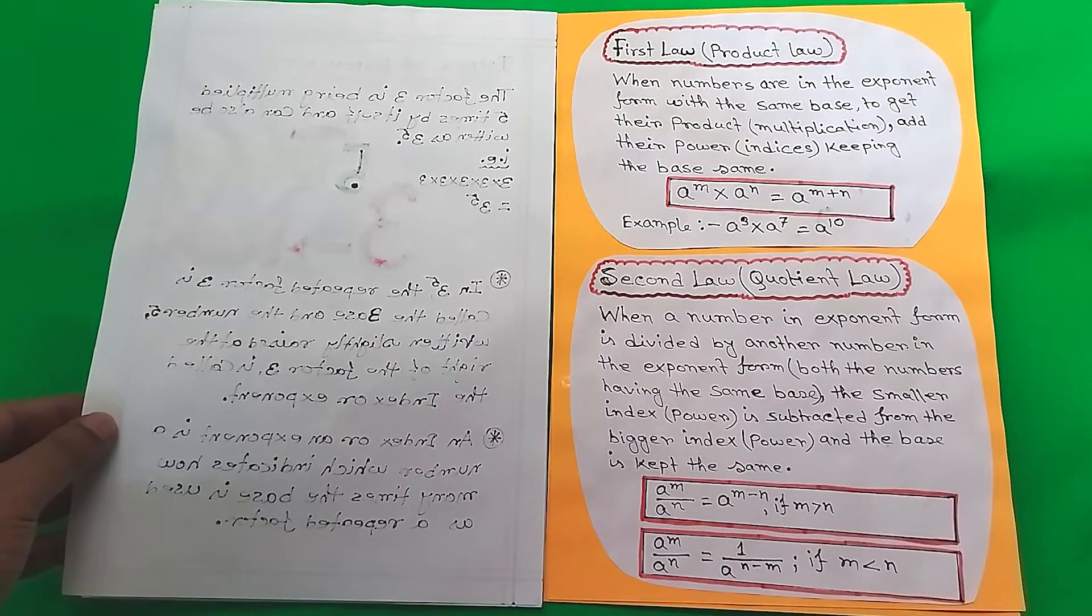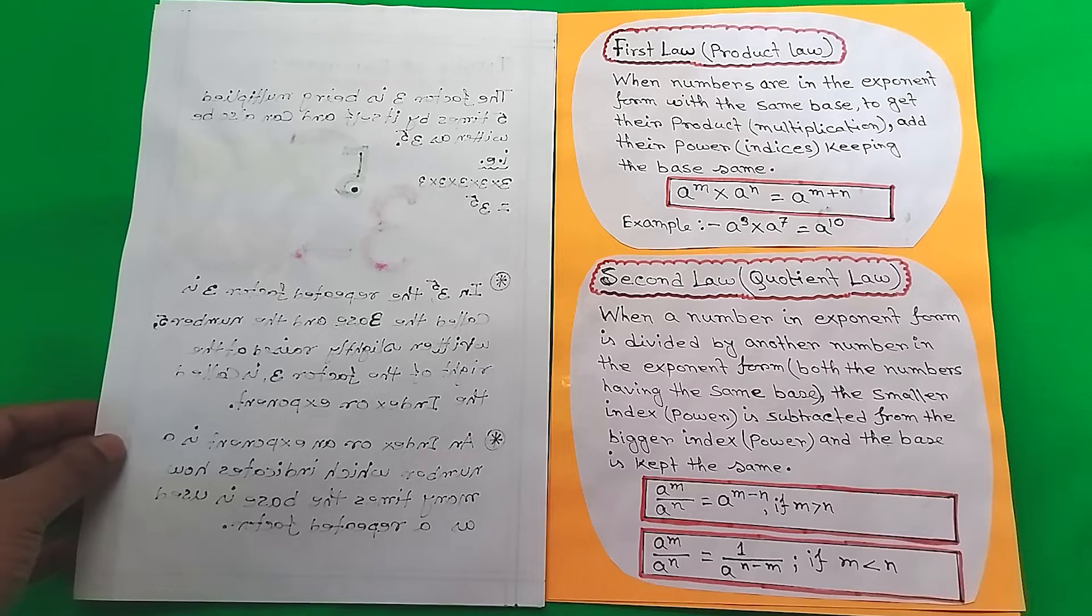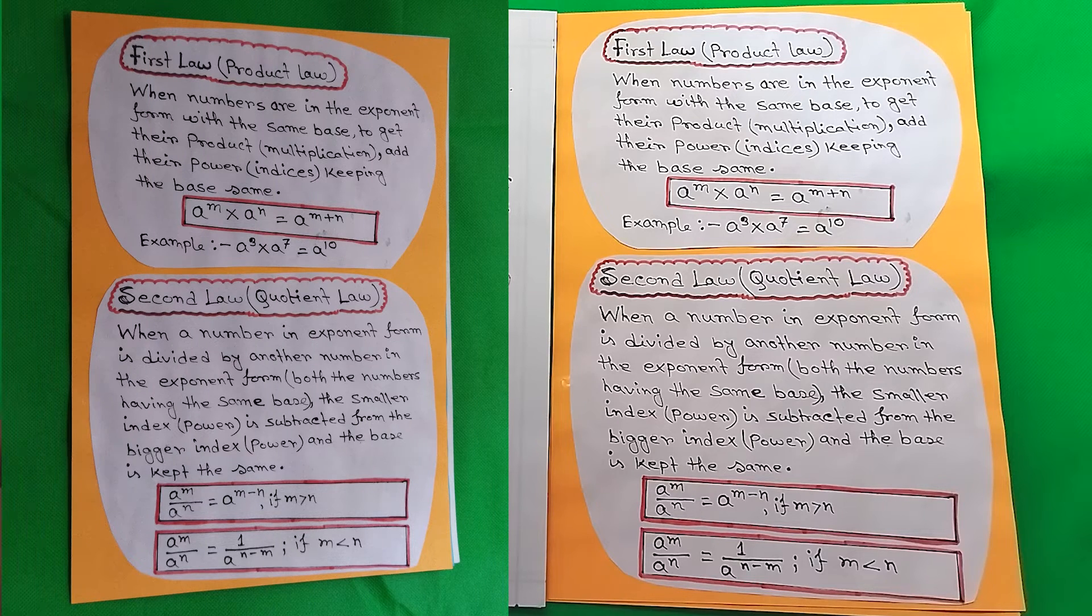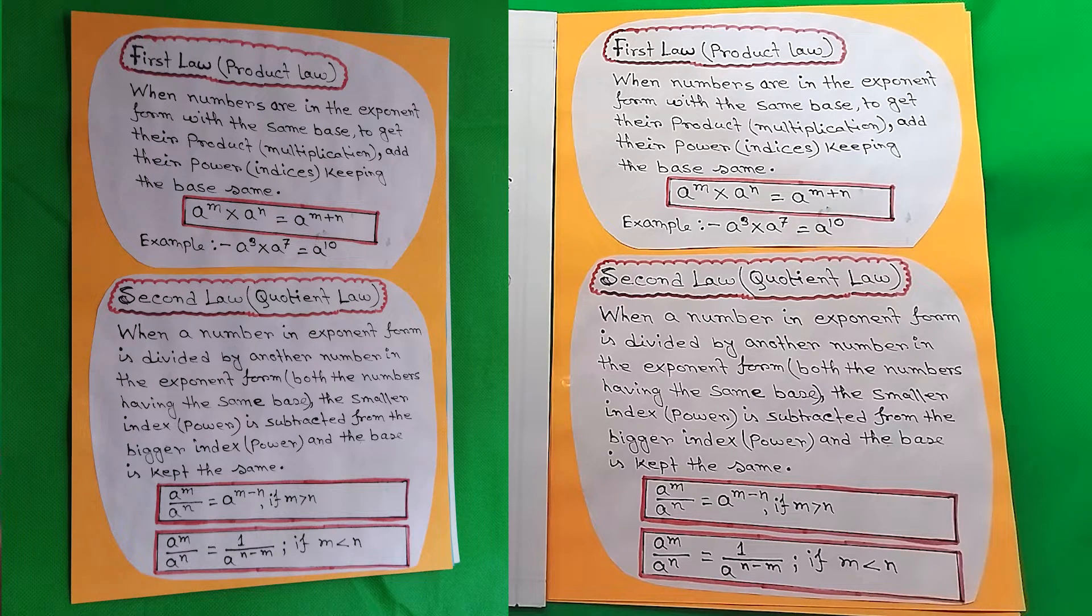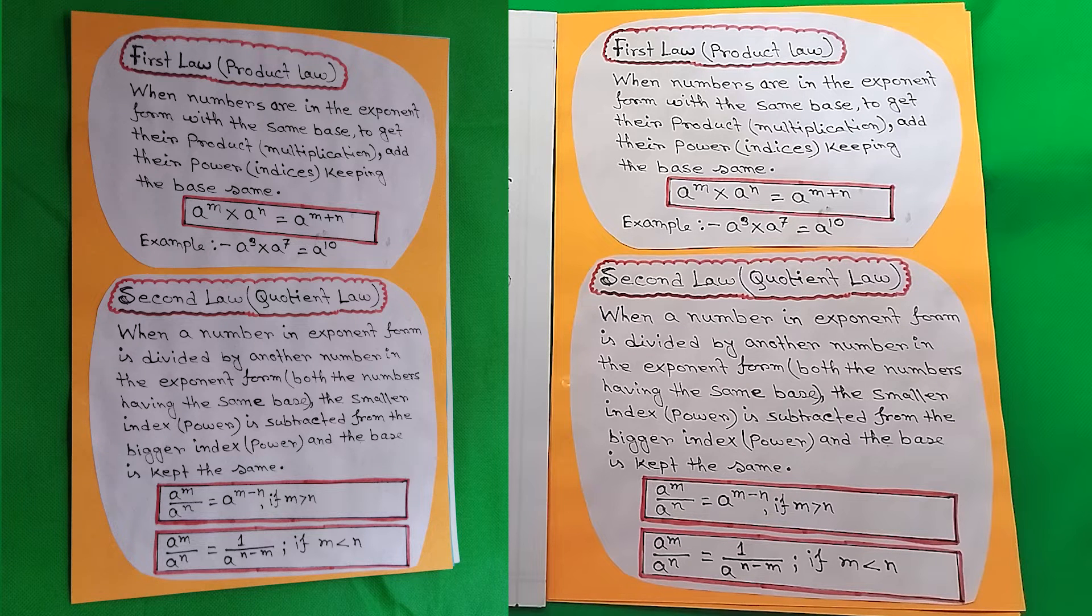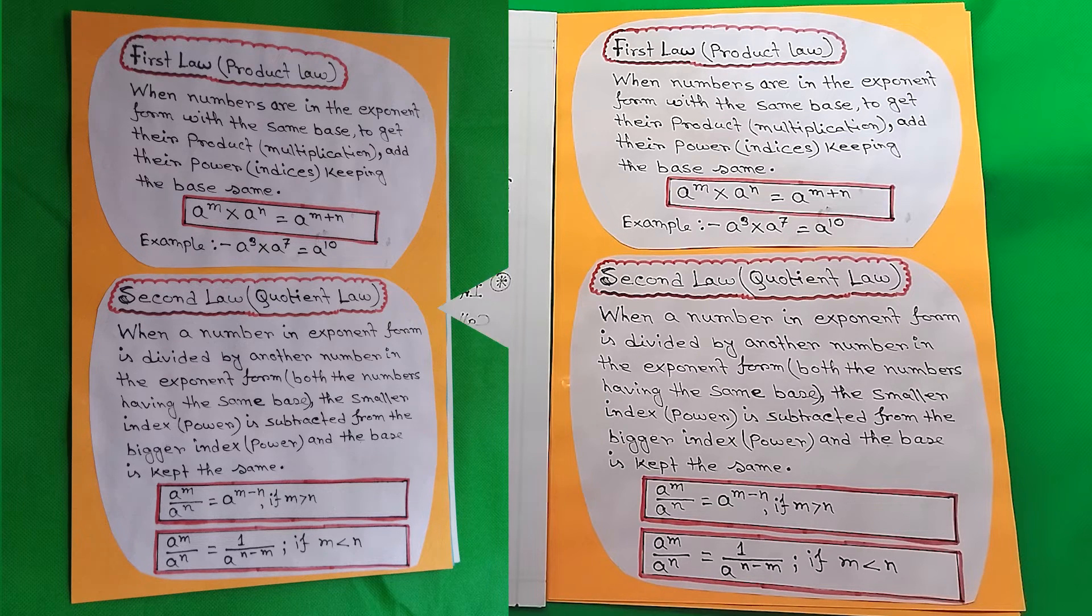Here we have our first law, Product Law. The description is written here. The formula is a to the power m times a to the power n equals a to the power m plus n. For example, a to the power 3 times a to the power 7 equals a to the power 10. We added the powers: 7 plus 3 equals 10.